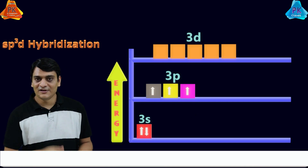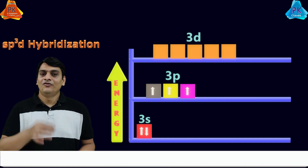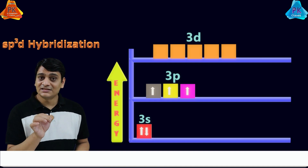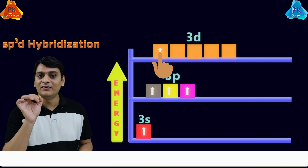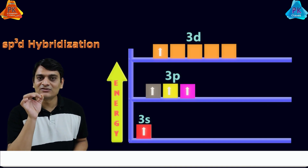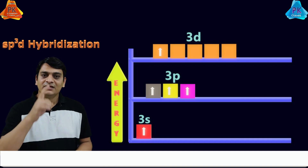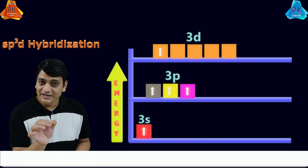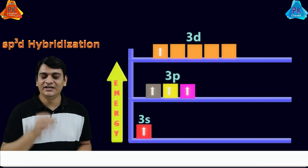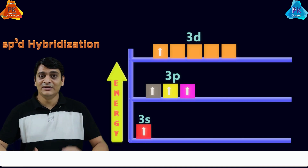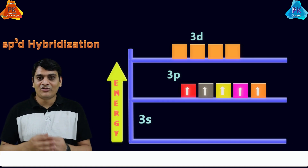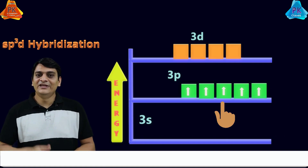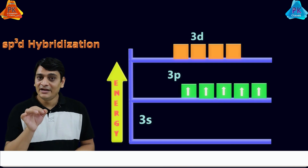In the excited state, one electron from the 3s orbital is excited and moves to the 3d orbital. All five orbitals containing electrons — 3s, 3px, 3py, 3pz, and 3d — will be mixed together and form a new type of orbital known as a hybrid orbital with equivalent energy and equivalent shape.